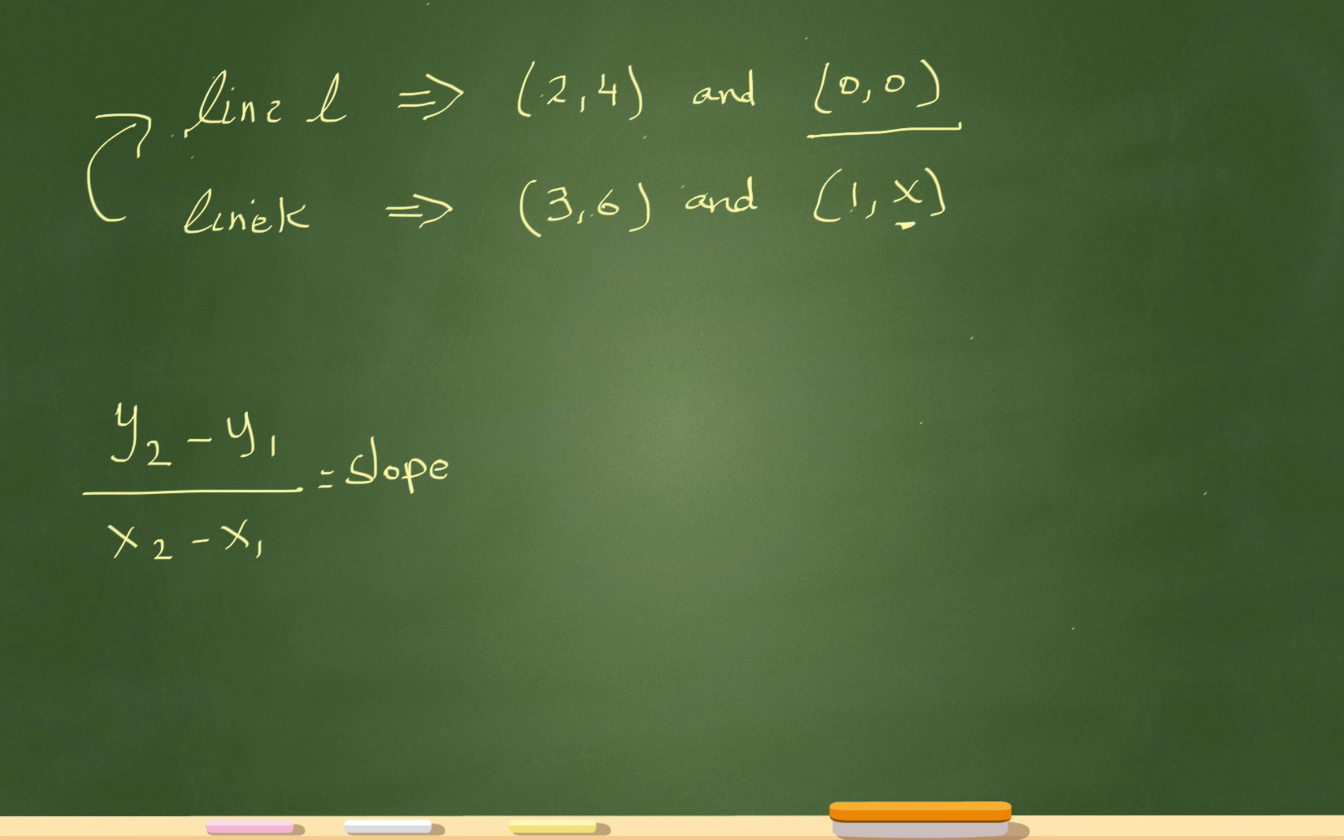I'm given two lines, line L and line K. It tells me line L passes through (2, 4) and (0, 0). And actually the problem says it passes through the origin, but I know that the origin is the same thing as (0, 0).